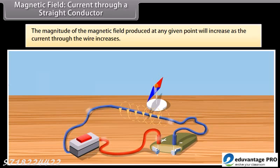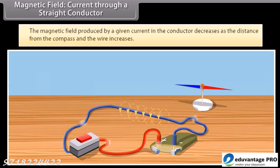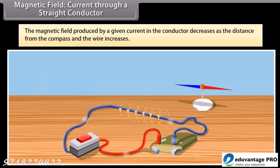Now try moving the compass away from the current passing through the wire. You will see that the magnetic field produced by a given current in the conductor decreases as the distance from the compass and the wire increases.